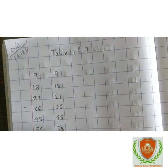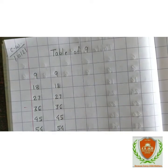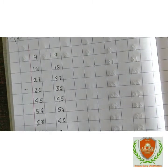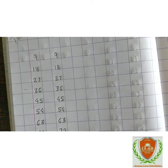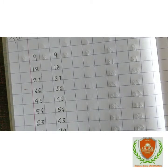9 sixes are 54, 9 sevens are 63, 9 eights are 72, 9 nines are 81, 9 tens are 90.